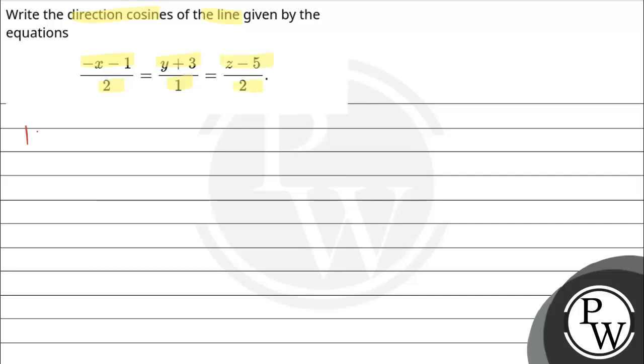To solve this question, we are going to use a formula as a key concept. Our key concept is, if a line's equation is given as x minus x1 divided by a equals y minus y1 divided by b equals z minus z1 divided by c.